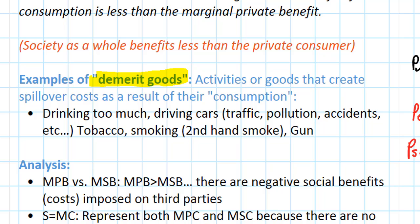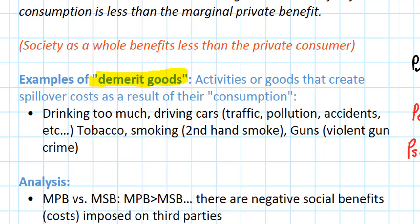In many countries, guns and violent crime resulting from guns could be considered a demerit good. Of course, governments regulate gun ownership, sometimes limiting gun ownership, sometimes setting ages at which people can buy guns. Guns and the violent crimes resulting from gun use could be considered a negative externality of consumption and a demerit good.